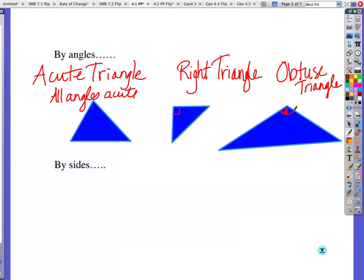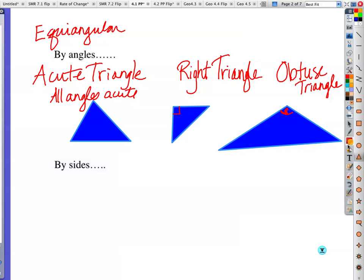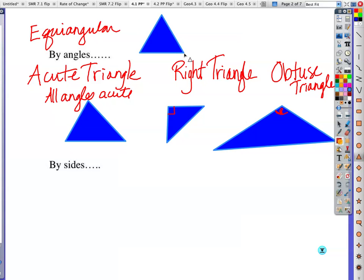I do want to point out, there's a special type of an acute triangle. It's when all of the angles are the same. They would all be 60 degrees, and we call that special case equiangular. If I could just draw a perfect triangle, we're going to call all of those 60 degrees, and that's equiangular. And it's a type, kind of a special type of an acute triangle.